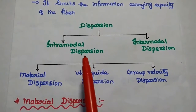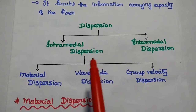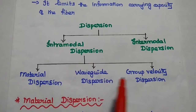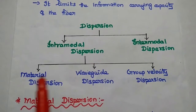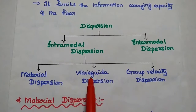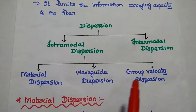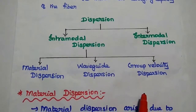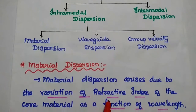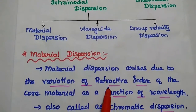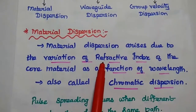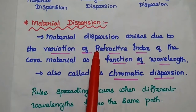Intramodal dispersion is further classified into three types: material dispersion, waveguide dispersion, and group velocity dispersion. In this video lecture, we are going to discuss material dispersion in detail.